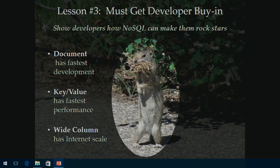This squirrel picture reminds me of a developer — they're busy chewing on their Java or Node.js code, and you catch them off guard. When you talk to developers, I want to show them how NoSQL can make them rock stars. NoSQL can really change how productive they are. That's not just anecdotal — it's true. We've been doing this for eight years. We have proven that MarkLogic makes developers two to ten times faster than relational and Java.